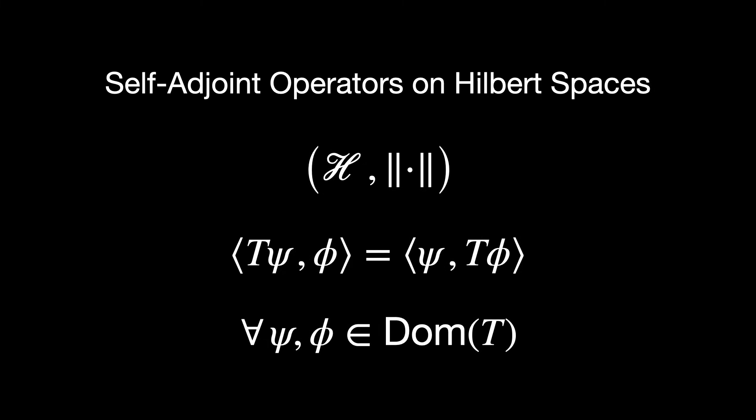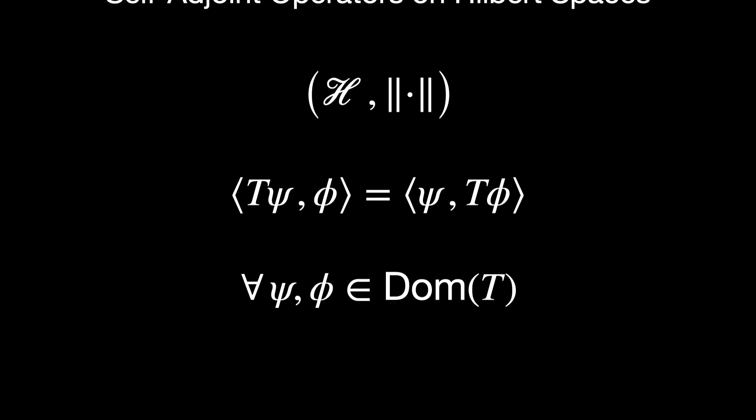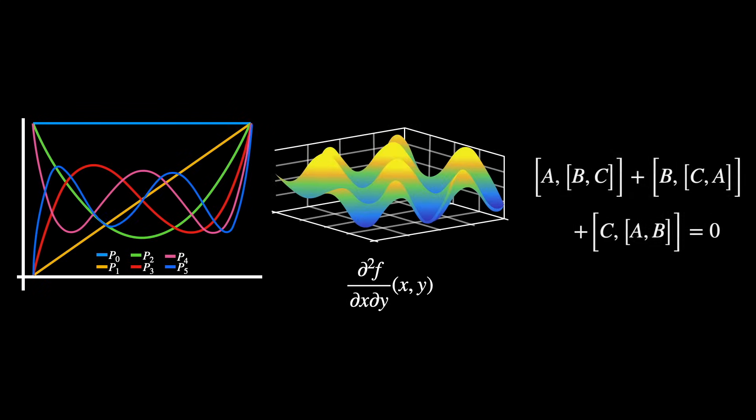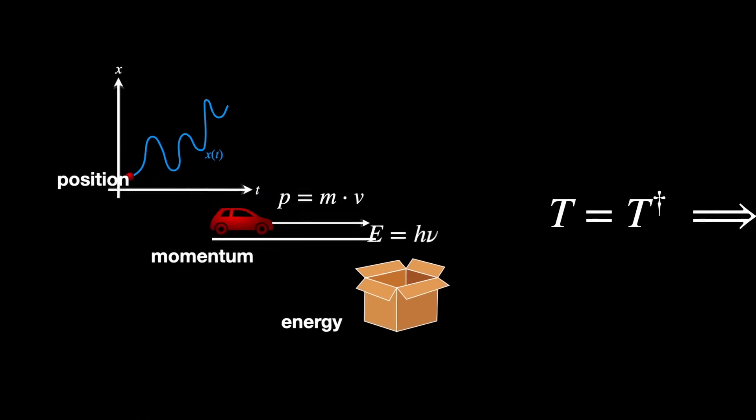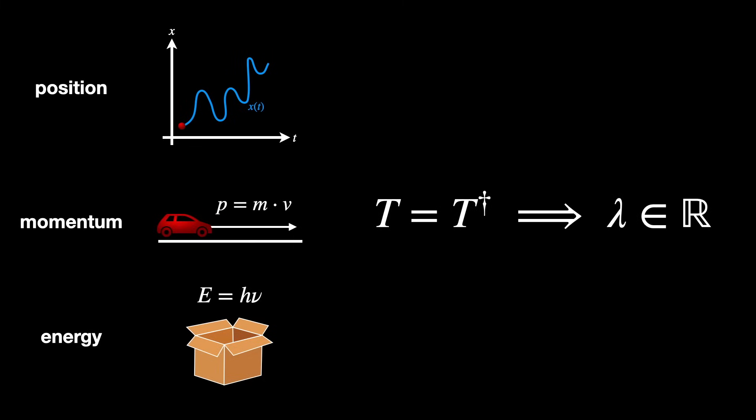Say you want to understand what self-adjoint operators and Hilbert spaces are. I mean, it makes sense that you want to study them. They are the backbone of functional analysis, partial differential equations, and operator algebras. They are super important in understanding the structure of Hilbert spaces. In applied math, they are even more important. In quantum mechanics, for example, every observable, so position, momentum, energy, is modeled by a self-adjoint operator because only these give us real eigenvalues. Did you see what was just done? You've been given even more motivation to study it. Now you're probably strongly convinced that this is an important concept to learn, and worth your effort to keep paying attention to the video. But what about the intuitive picture?